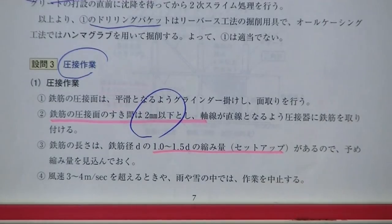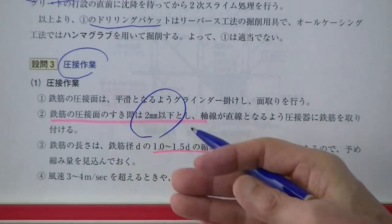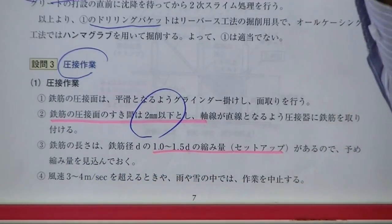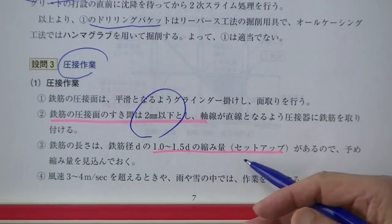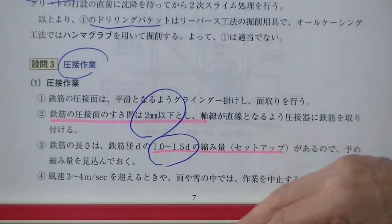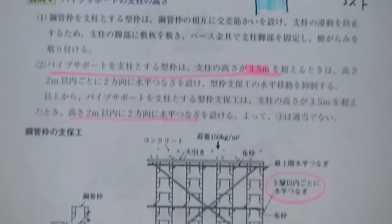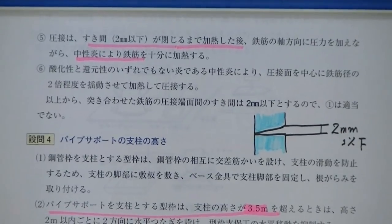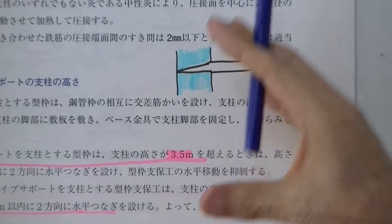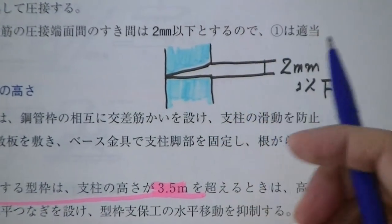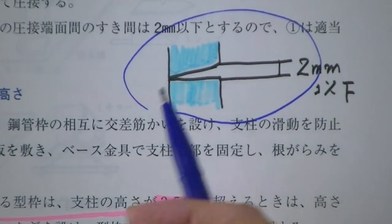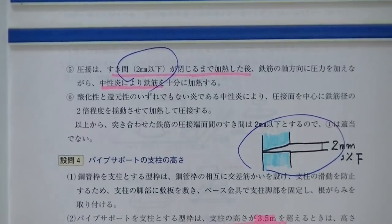鉄筋ガス圧接作業をするときは、鉄筋と鉄筋の両端面の隙間は2ミリ以下でなければいけません。圧接するその当日に表面仕上げをします。圧縮するときの縮みしろはセットアップといって鉄筋の直径の1.5倍程度です。圧接面の2ミリ以下というイメージをちゃんと頭の中に入れてください。